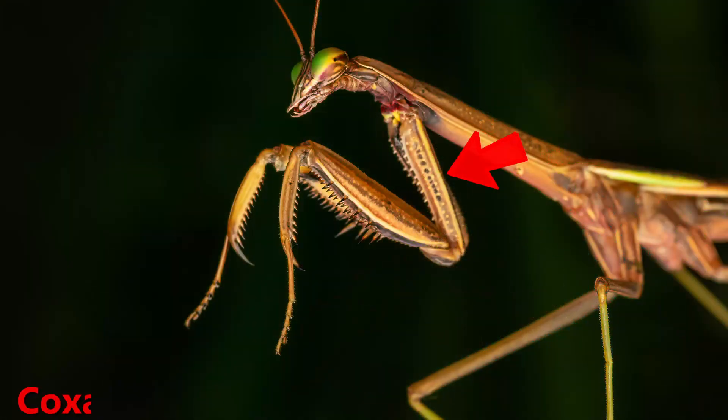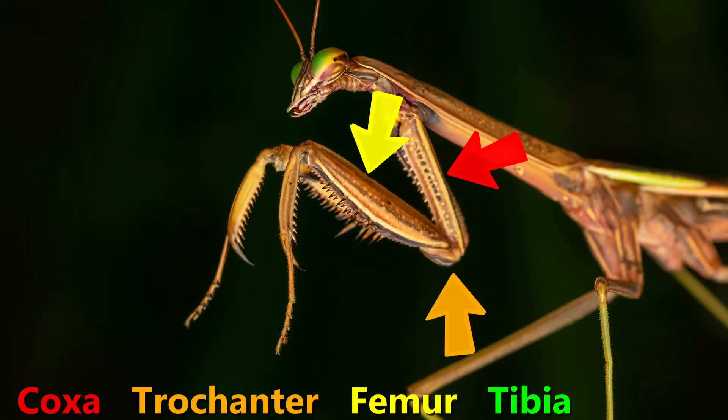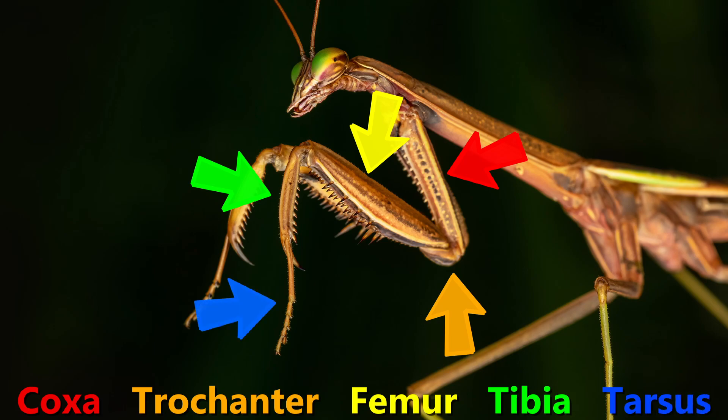The five main parts of an insect leg are the coxa, trochanter, femur, tibia and tarsus.